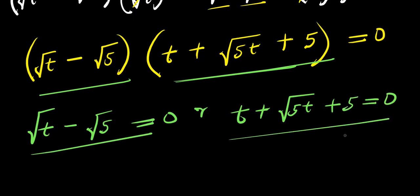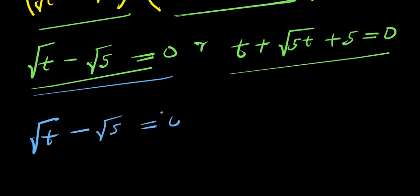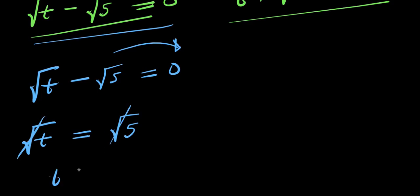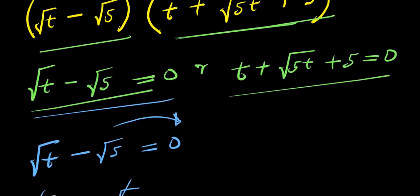Let's solve the first equation: √t − √5 = 0. Moving √5 over, we get √t = √5. Squaring both sides, this gives t = 5. This is our first solution, t₁ = 5.